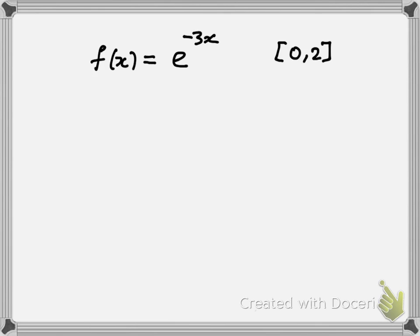If it does, find all values c in the open interval such that f prime of c equals the slope of the secant line.